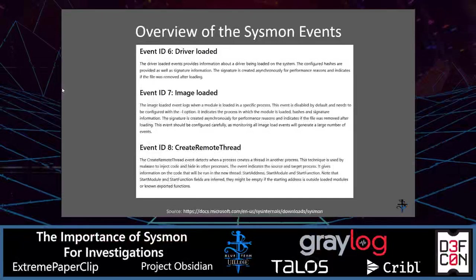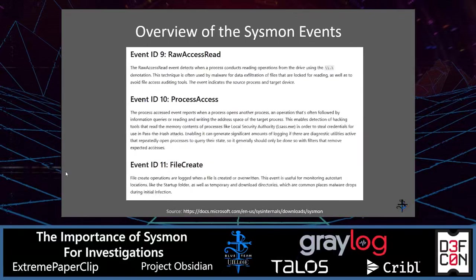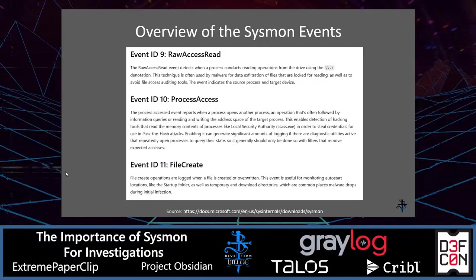Event ID 6 is driver loaded — very useful. Event ID 7 is image loaded; in the world of Sysmon, an image is basically an executable, not a picture. Event ID 8 is create remote thread. Event ID 9 is raw access read. Event ID 10 is process access — very useful, for example for finding evidence of Mimikatz. Event ID 11 is file create — also very useful; for example, if someone ran a query to spit out BloodHound.zip, you'll see that file was created.